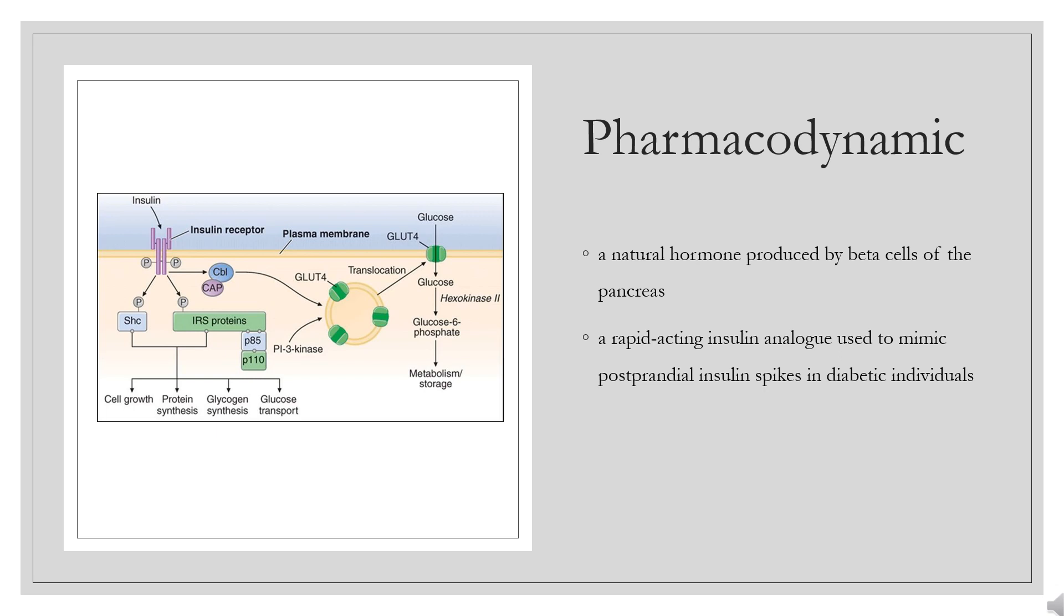Insulin also promotes growth and is required for the actions of growth hormone, e.g. protein synthesis, cell division, DNA synthesis. Insulin Lispro is a rapid insulin analog used to mimic postprandial insulin spikes in diabetic individuals. The onset of action of Insulin Lispro is 10-15 minutes. Its activity peaks 60 minutes following subcutaneous injection and its duration of action is 4-5 hours.